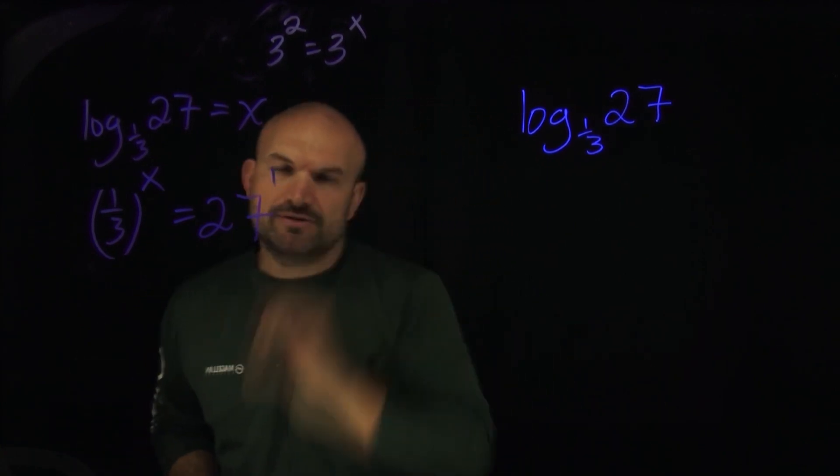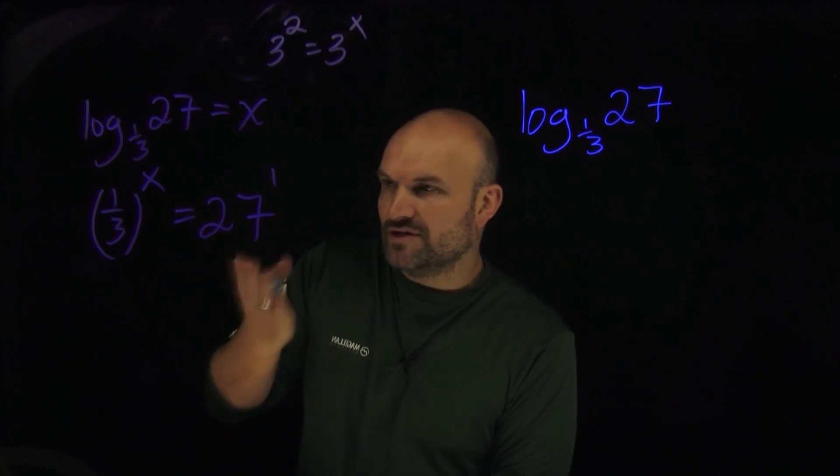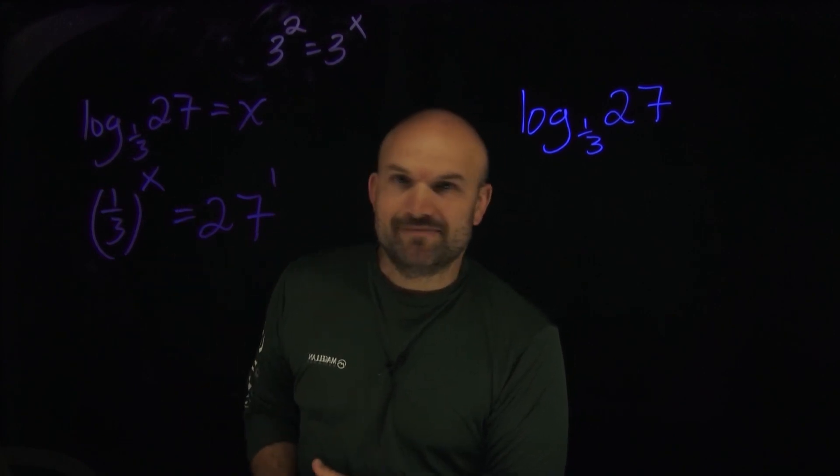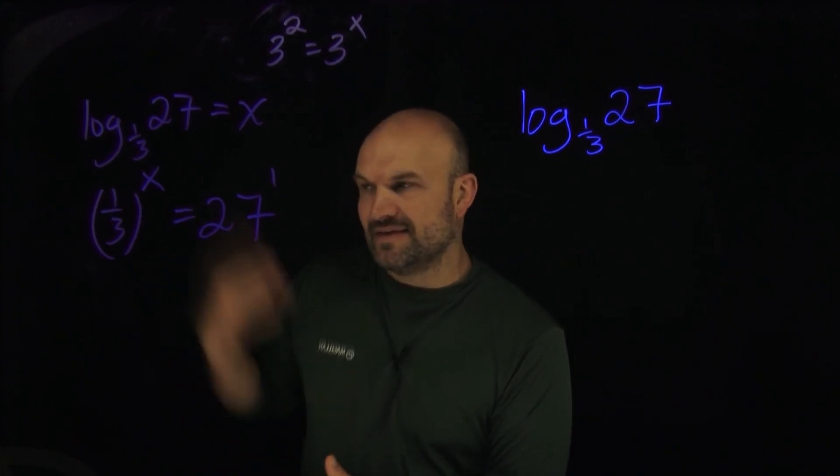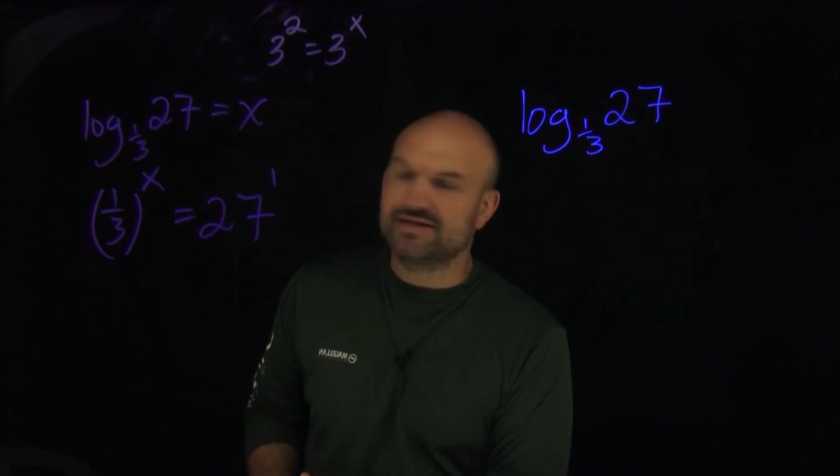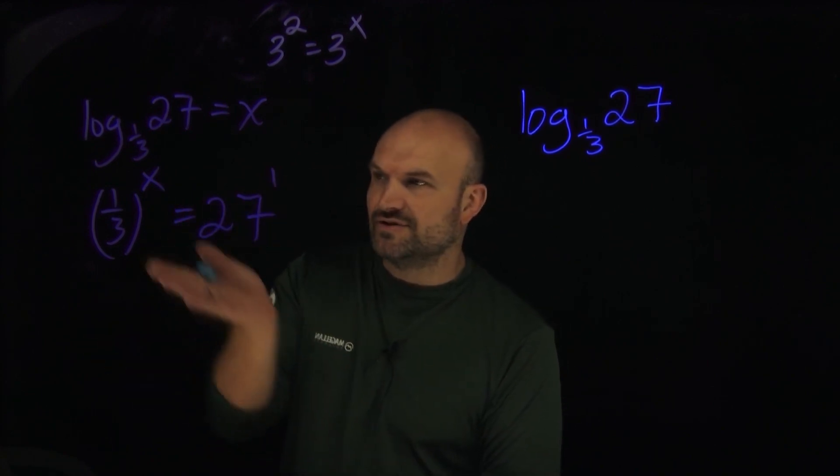You can say 27 is raised to a power, but you can say one-third and 27 are definitely not the same base. So then what we need to do is think about this and say, how can we go ahead and rewrite this with the same base?